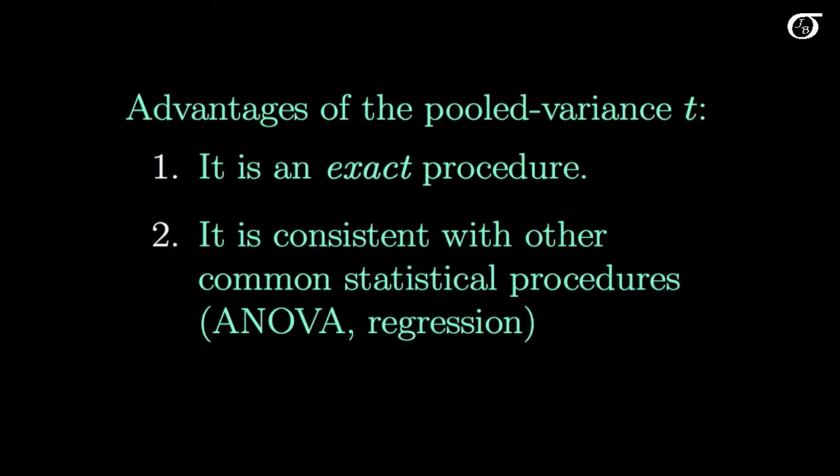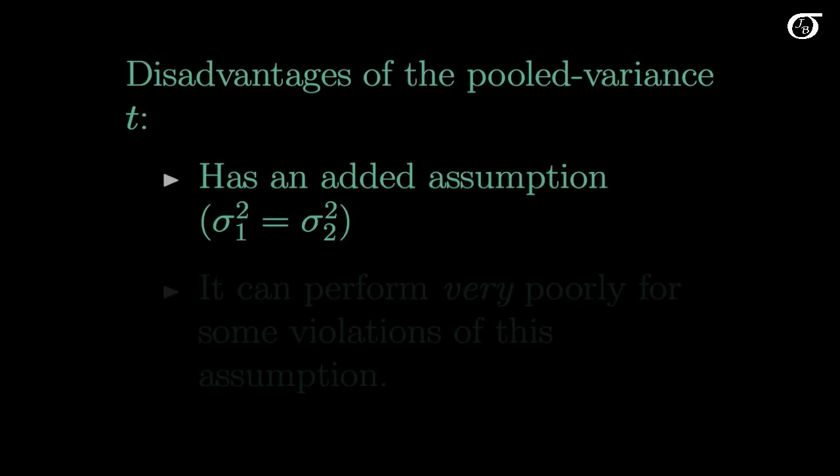It is also consistent with other common statistical procedures we use later on, like ANOVA and regression, meaning we'd come up with the exact same results using the pooled variance t-procedure as we would with ANOVA or regression. The disadvantage is that it has the added assumption of equal population variances, which most of the time is not going to be true.